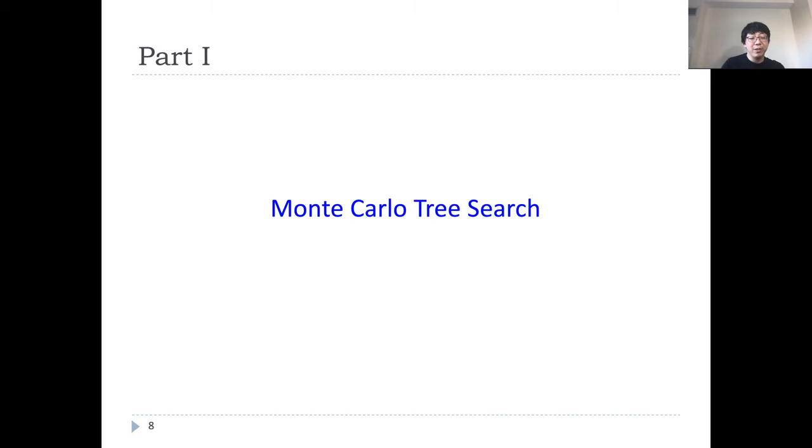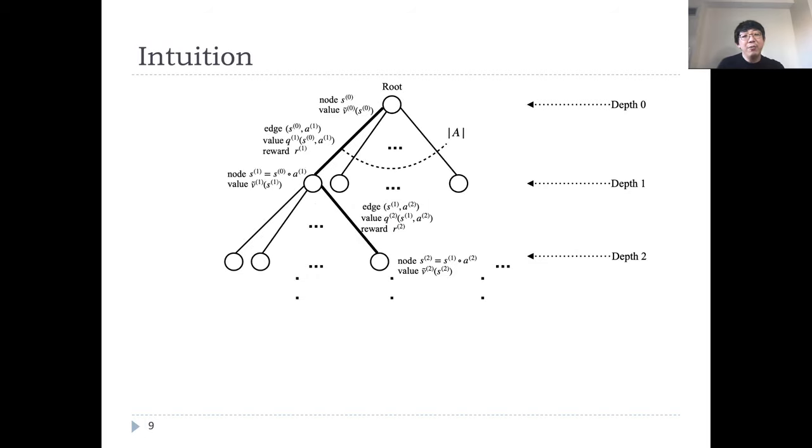We begin with Monte Carlo Tree Search. First, let's try to develop some intuition on the ideal scenario. Suppose we are given a root state S, and would like to obtain an estimate of V*(S). What can we do? Well, since we have a simulator, we can simulate it for one step to get an immediate reward. That means, for each of the eight actions, we simulate each action for infinite number of times, and we get an exact reward for one step.